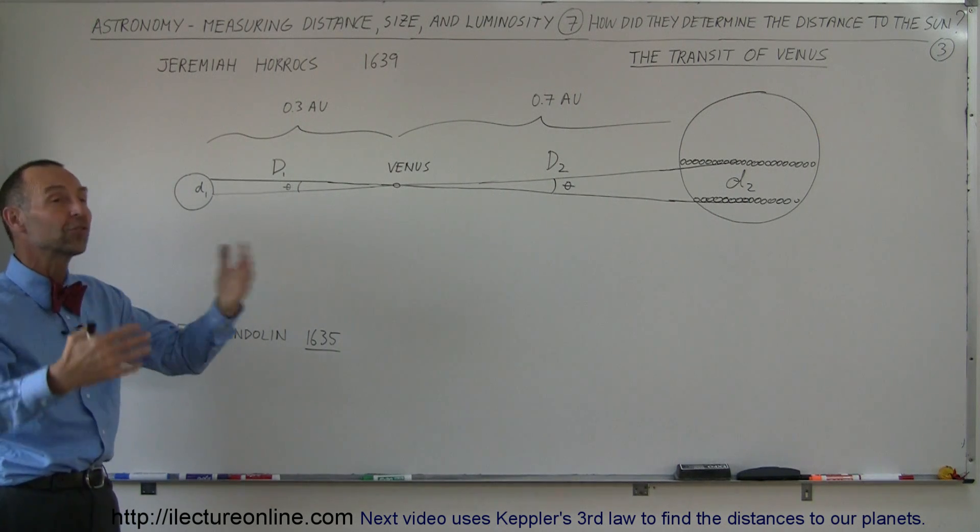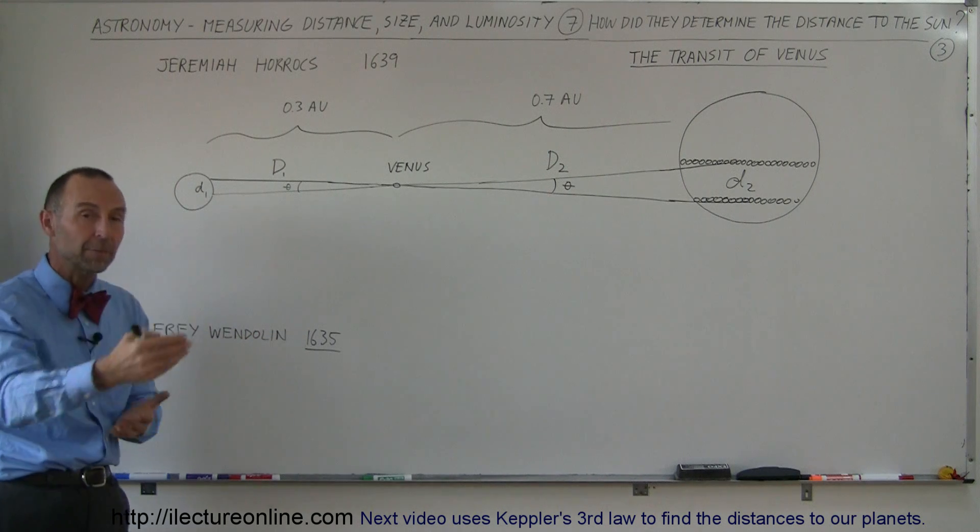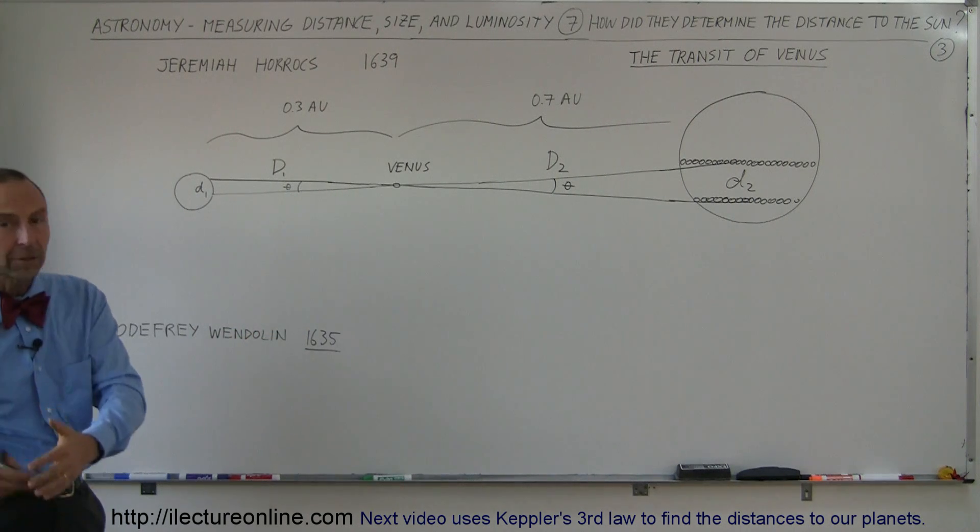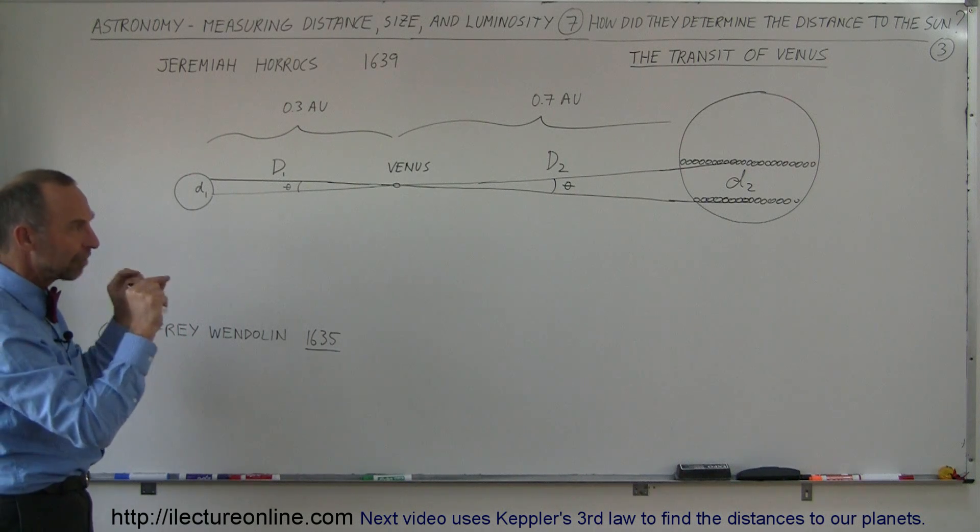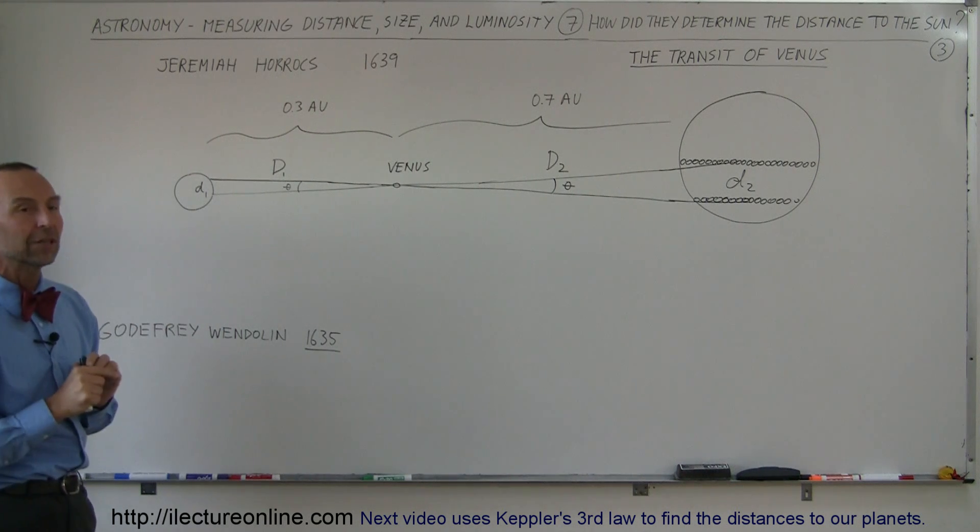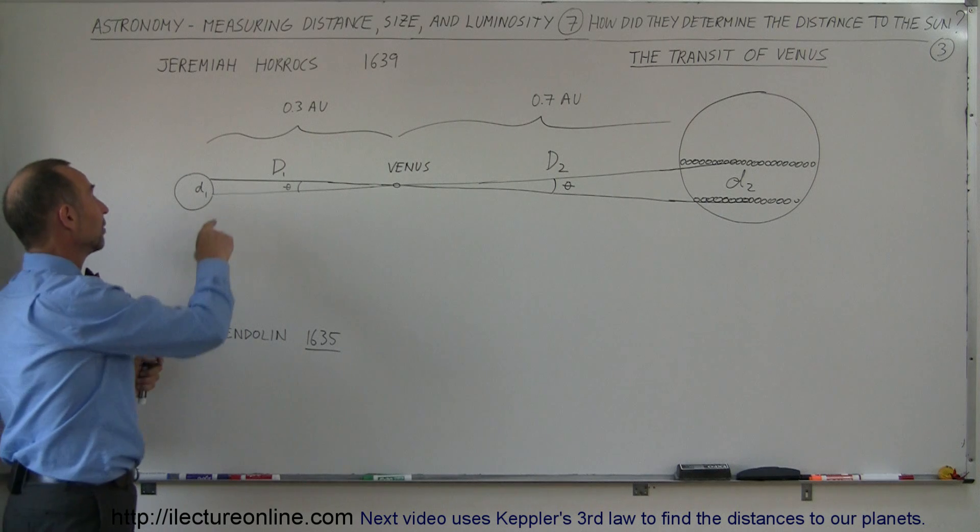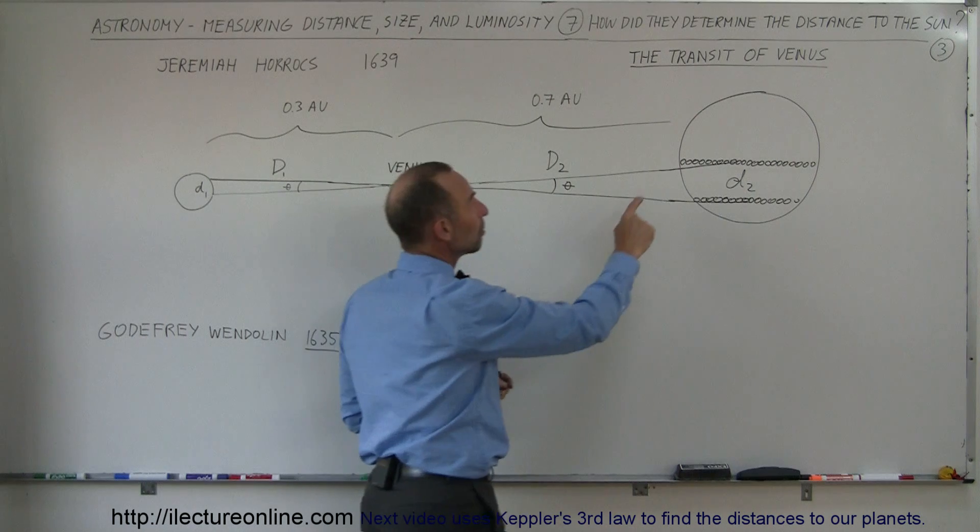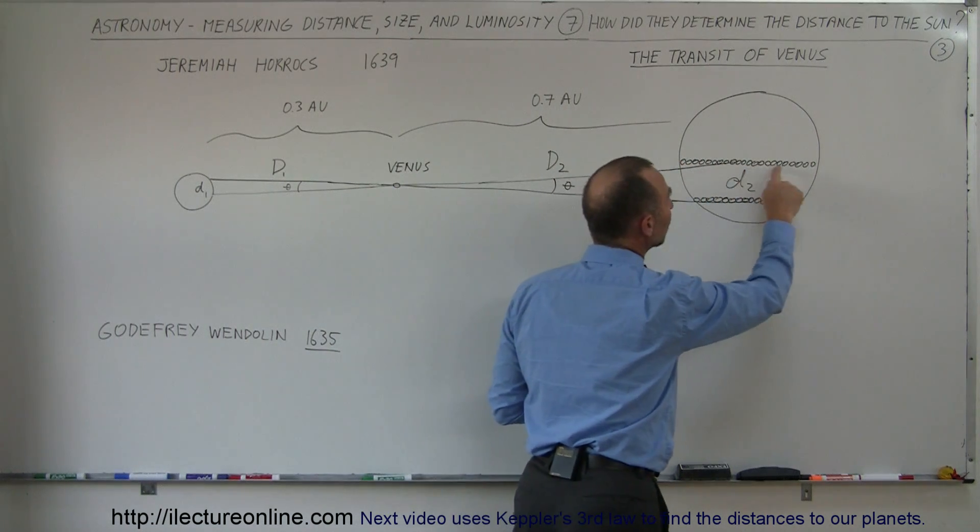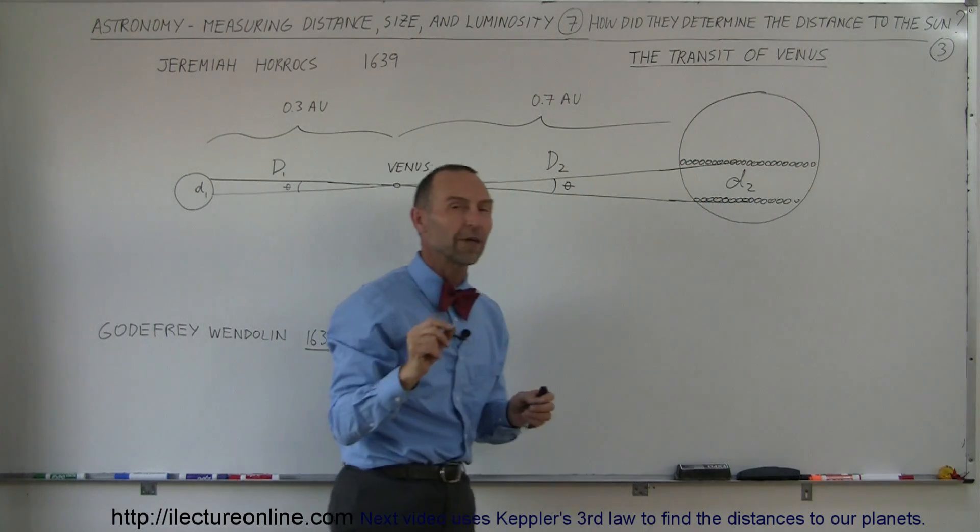They sent people out to all places around the world, to Tahiti, to South America, Paris, London, wherever they needed to go to get various aspects of that transit of Venus. And so what they would do is they would have a person on the Earth right there, another person on the Earth right there, they would look at the transit of Venus and measure the time that it took for Venus to travel across the sun.